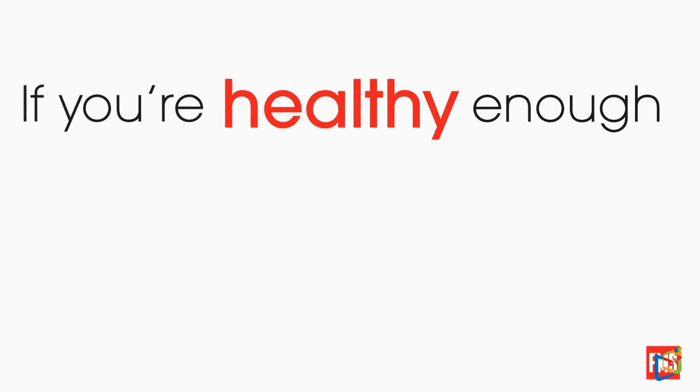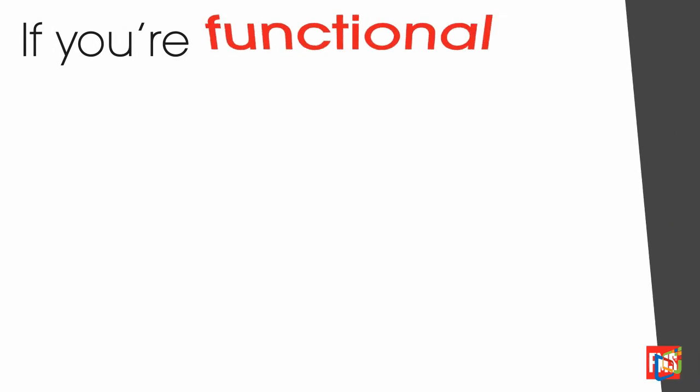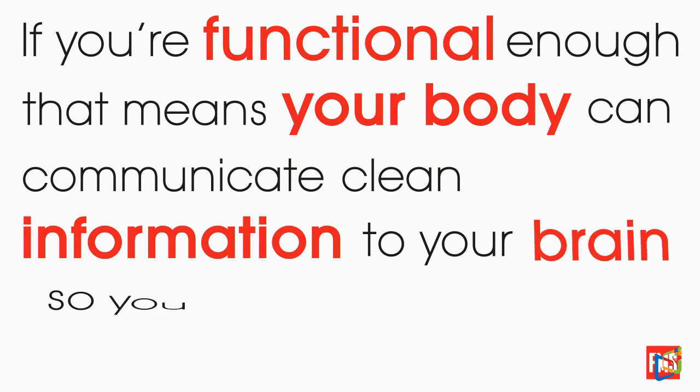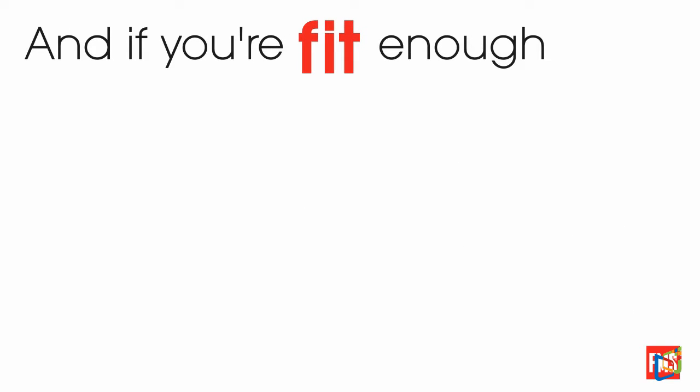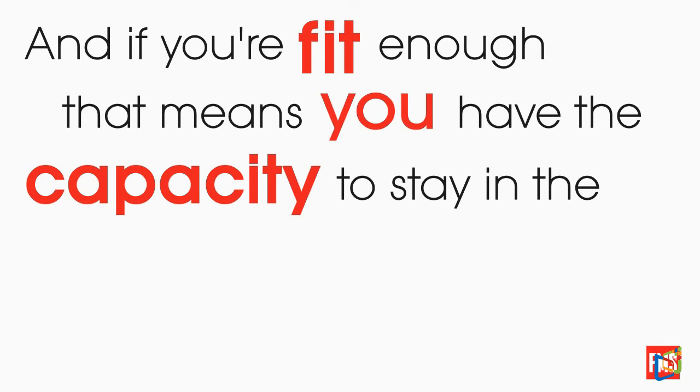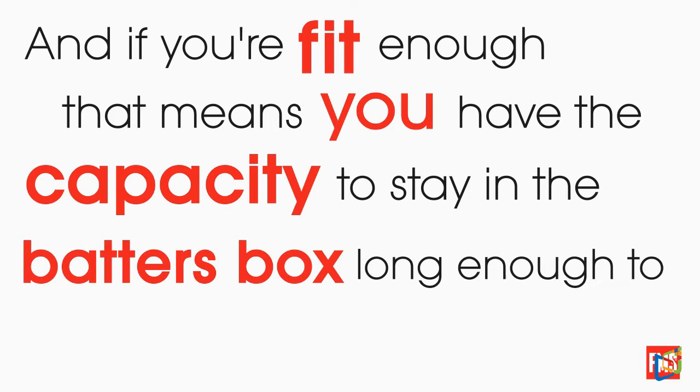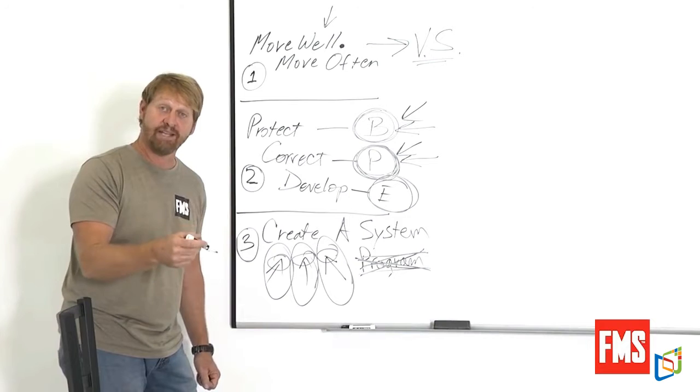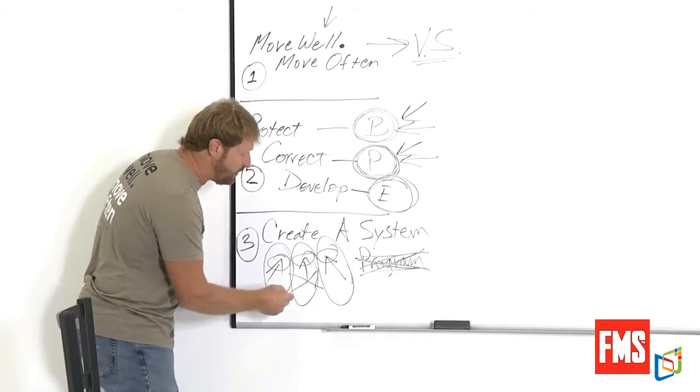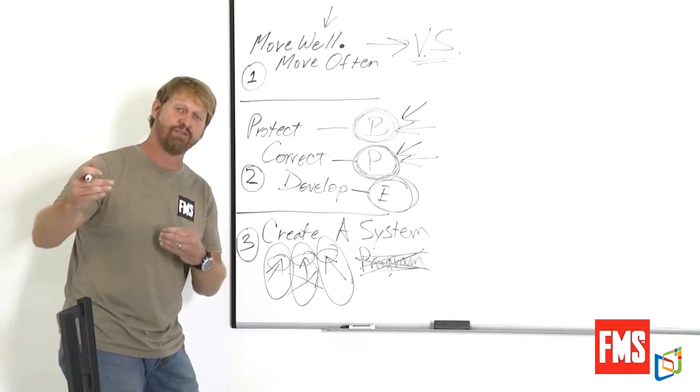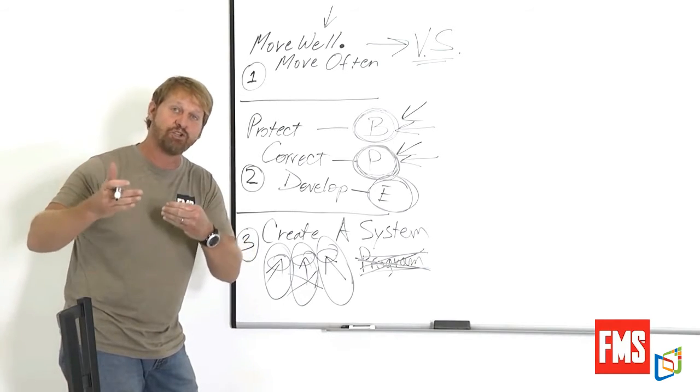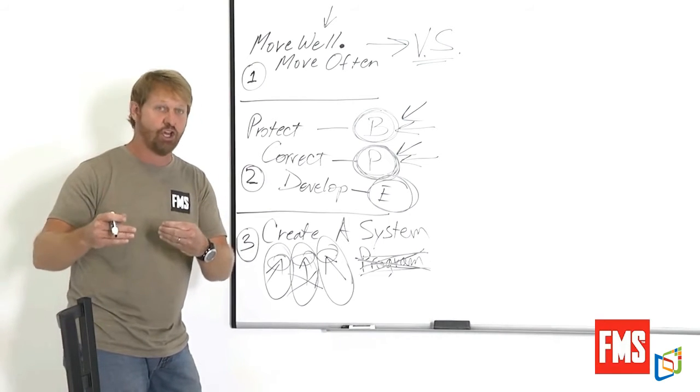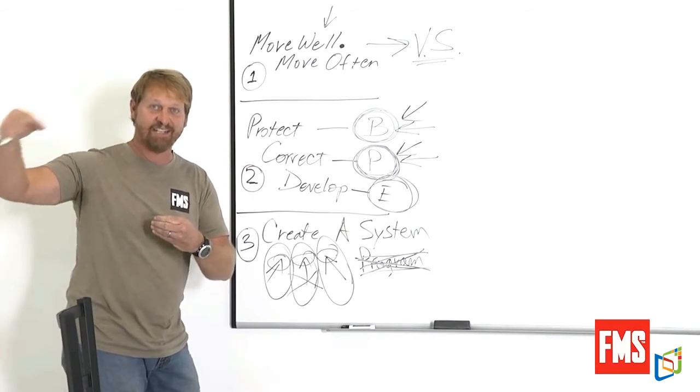If you're healthy enough, then that means you can grow and repair. If you're functional enough, that means your body can communicate clean information to your brain so your brain can learn to move. And if you're fit enough, that means you have the capacity to stay in the batter's box long enough to learn to be a batter. Stay on the tennis court long enough to learn to play tennis. But if your physical support and your function will not let you stay on the tennis court as long as everybody else, then you restrict your ability to learn to do that skill. So you've got to have the physical base or the soil to plant the seed of tennis into.